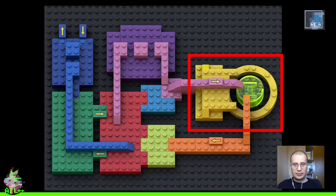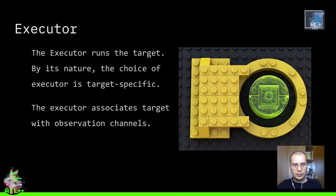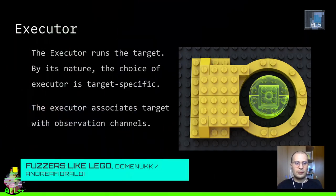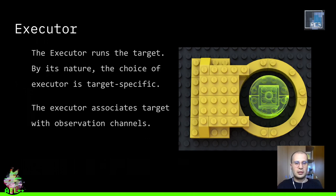We've discussed observation channels that are deeply connected with the target, and the data lives inside the target. But how can we instruct the target about doing something? The component for this purpose is the executor, which basically instructs the target about the current input and runs the iteration — runs a fuzz case, runs the target with the given input. For instance, if your target runs inside an emulator, the executor will place the input in a determined area of memory in the emulator and start the execution of the emulator to run the target with the given input.